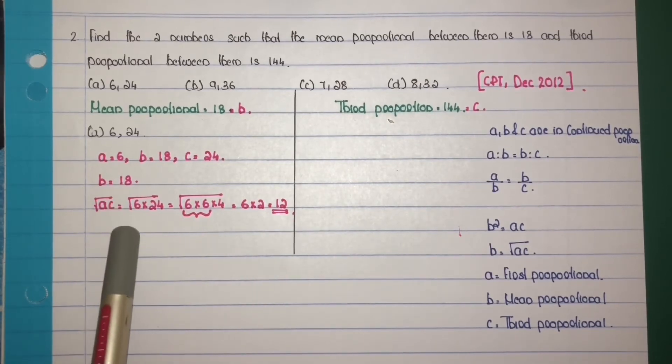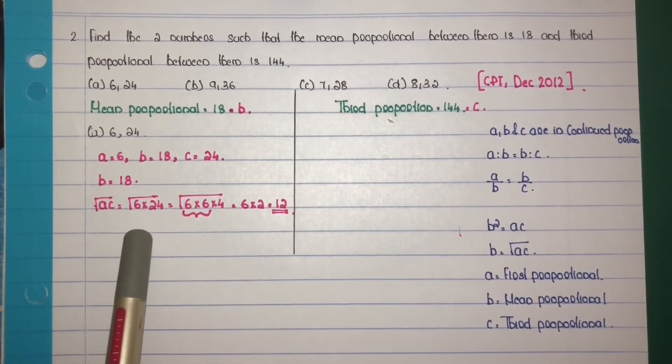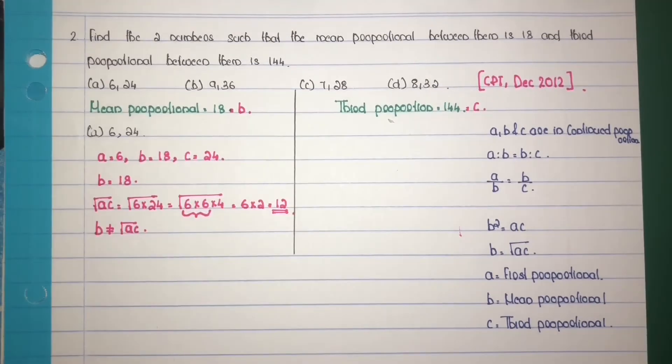That is B is not equal to root AC, so the first option does not satisfy the first condition. Move on to consider the second option: 9 and 36.